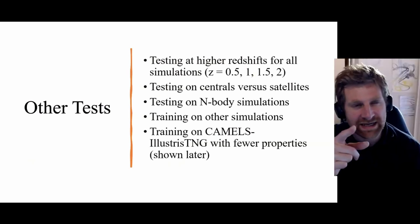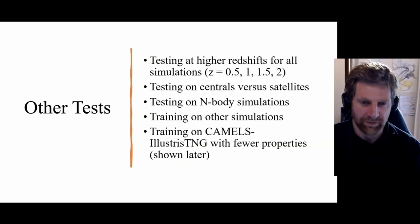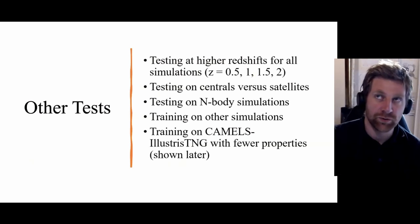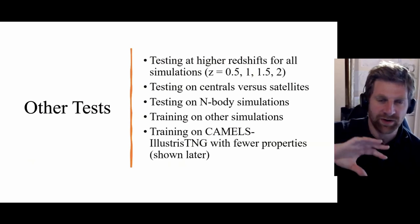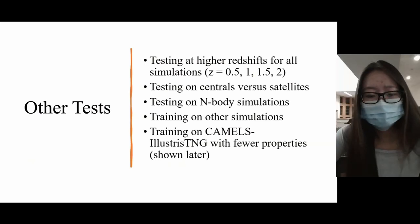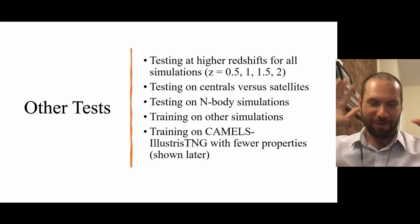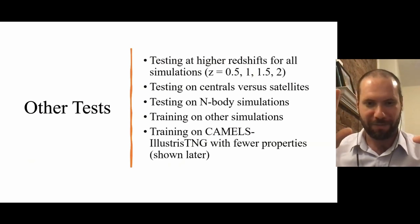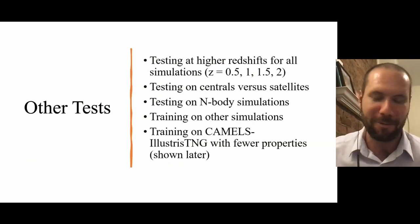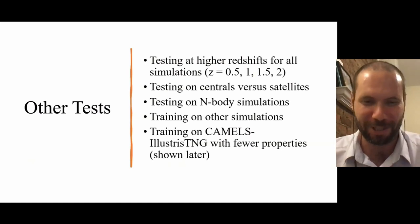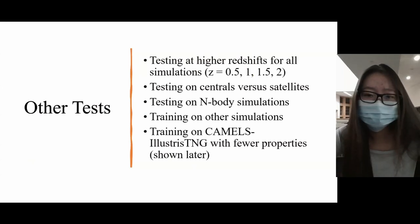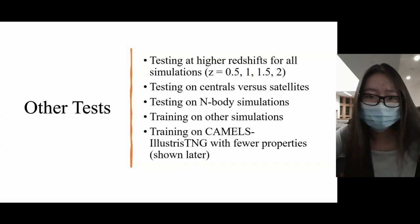Just to clarify - when we say testing, we're using the neural network that was already trained on the original data. The idea is that we train only on IllustrisTNG at one redshift, and then it works for everything else, which is very surprising because neural networks don't usually extrapolate well. Because of this, we were very interested in finding an analytic expression for the total mass to see what the underlying physics behind the relation was.